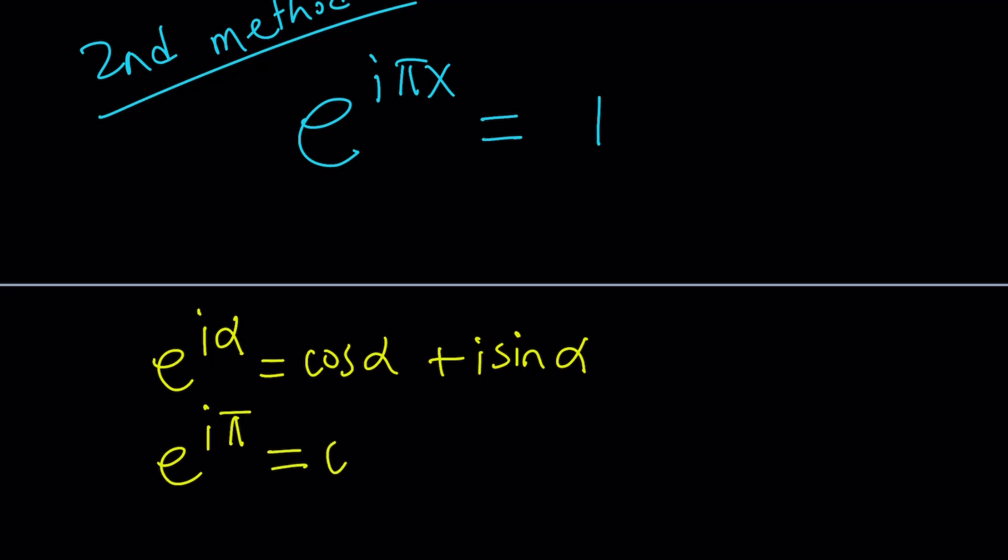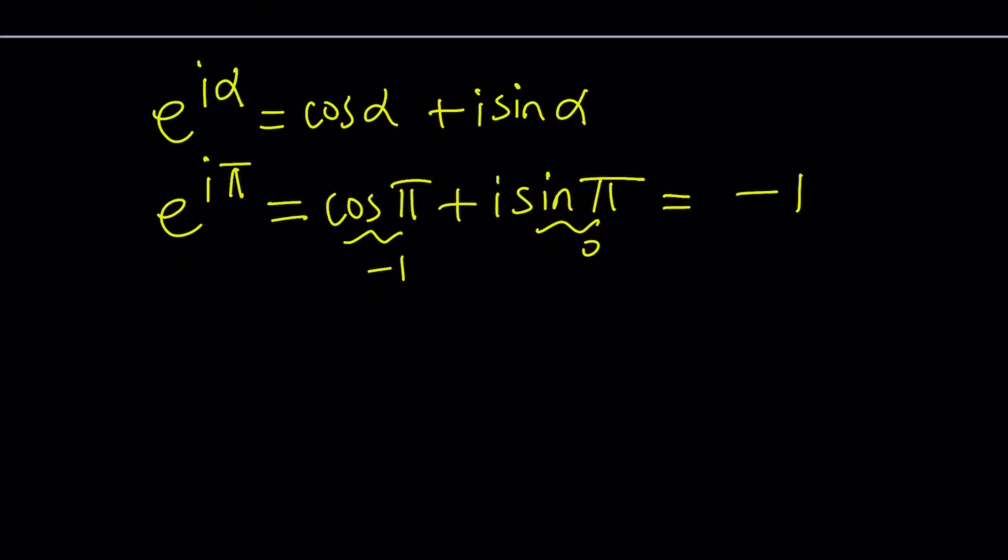So, I'm going to write this as, again, e to the power i alpha is equal to cosine alpha plus i sine alpha, right? That was the formula that I used. But I want to do this a little differently. And what is e to the power i pi? e to the power i pi is cosine pi plus i sine pi. This is actually negative 1. Because cosine pi is negative 1, sine pi is 0.